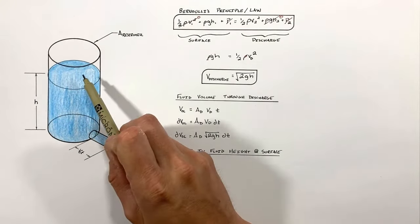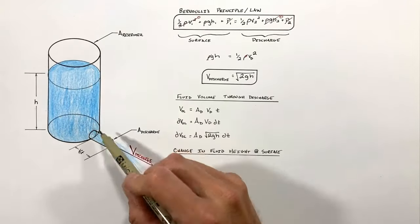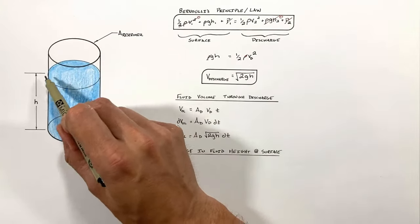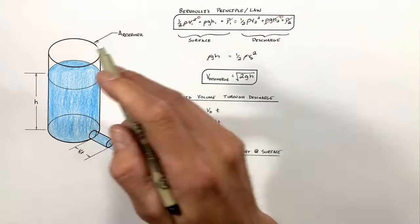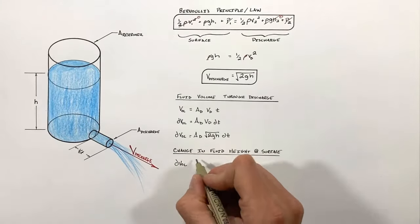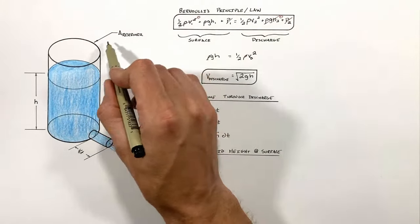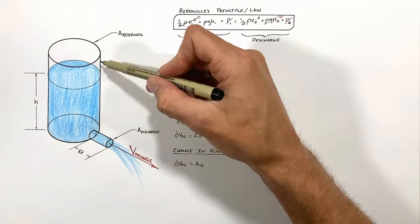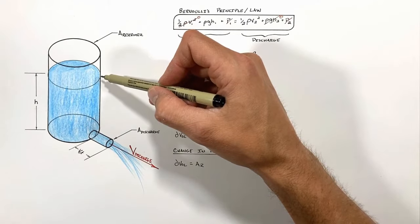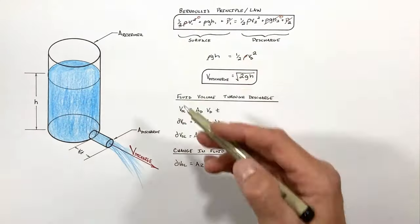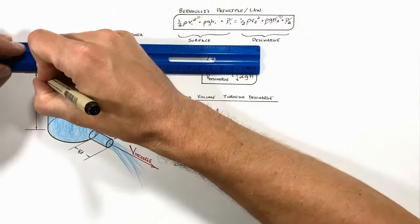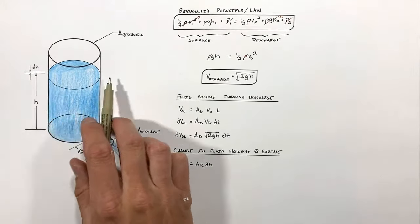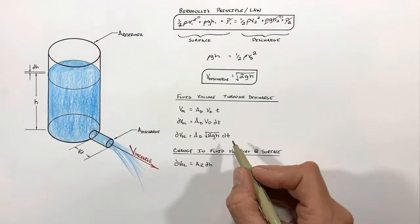Looking at the surface of the reservoir, if we allow an infinitely small amount of fluid out through the discharge, then that same change in volume is going to have to occur at the surface of the reservoir. This means dV is going to be equal to the cross-sectional area of the reservoir multiplied by the change in height within the reservoir — which we're going to call not h, the total height, but dh: the infinitely small change in height of the fluid level which will occur in any given instant.